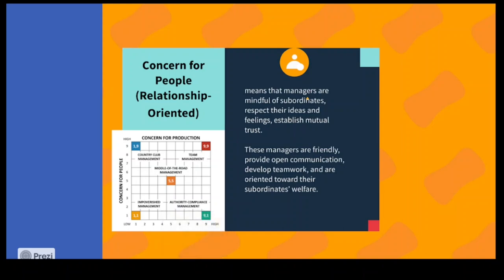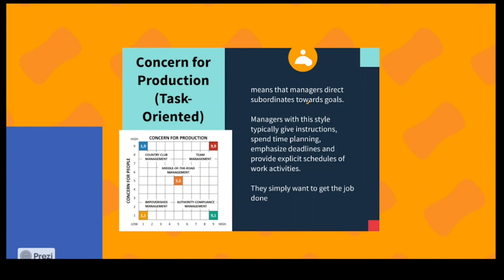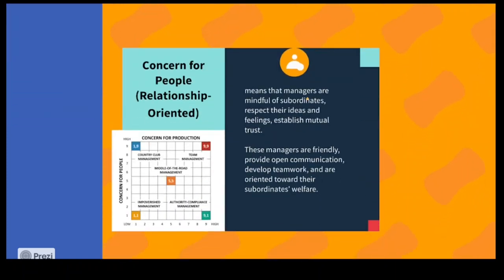You might see high concern for production in mass-scale industrial settings — even today, think of sweatshop-like leadership sometimes seen in South Asia during early industrial times. Concern for people is especially important in the service industry, where the quality of the service giver is highly visible — for example, in tourism, hospitality, and education.